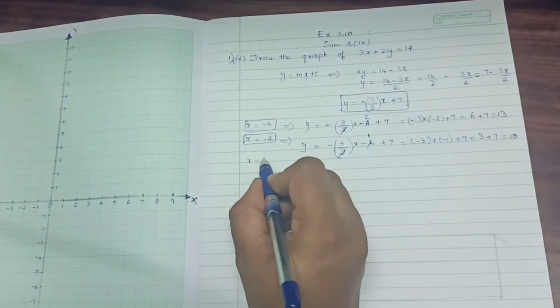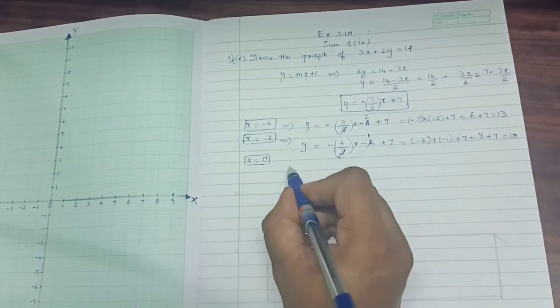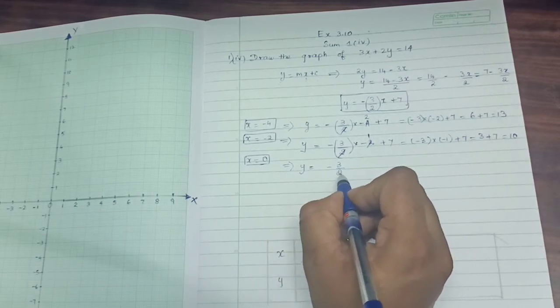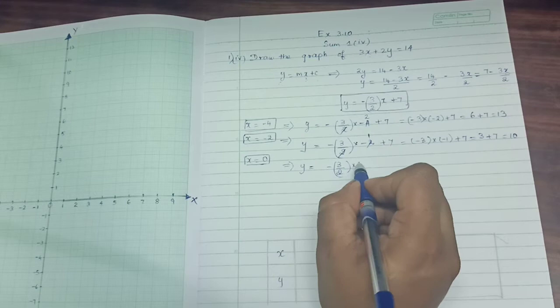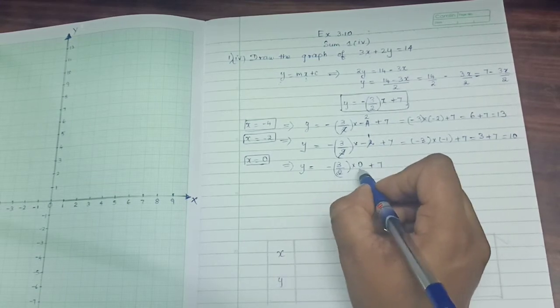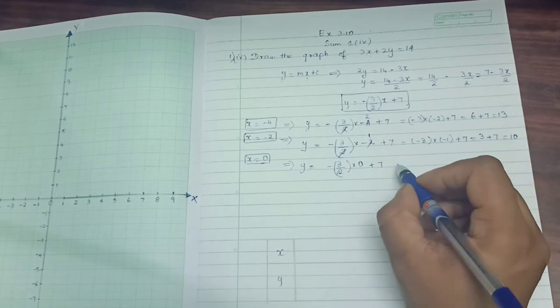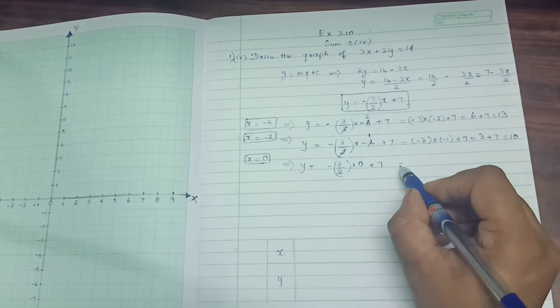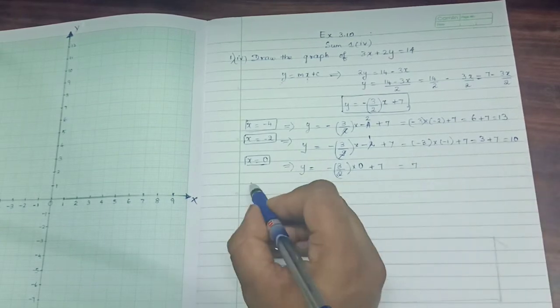Next, x equals 0. That means y equals minus 3 by 2 into 0 plus 7. So this whole term becomes 0. Minus 0 is nothing, 0 only. 0 has no sign. The answer will be 7. Next,